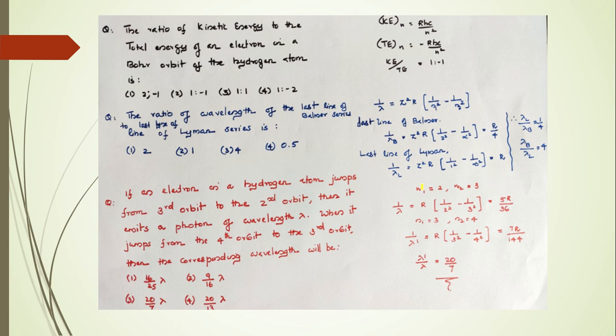The ratio of kinetic energy to the total energy of an electron in Bohr orbit of hydrogen atom. That concept is equally applicable for gravitational orbits in the concept of satellites. You just get the answer as 1 is to minus 1.